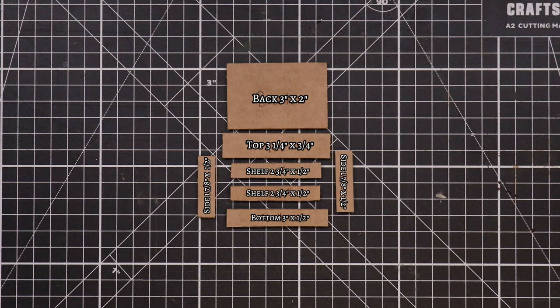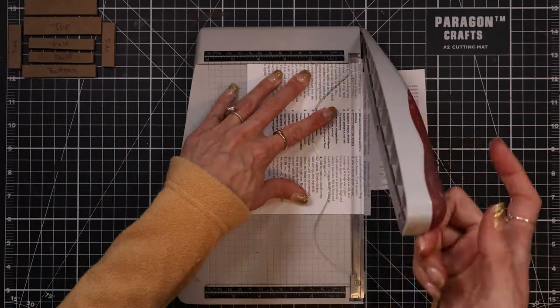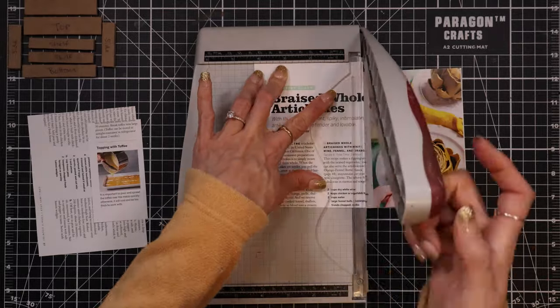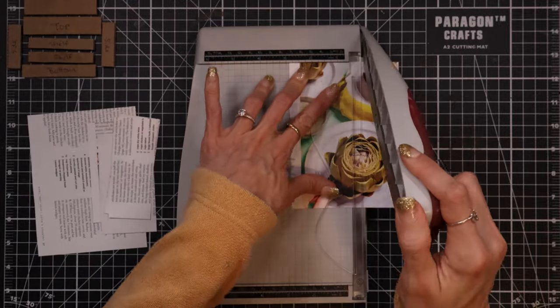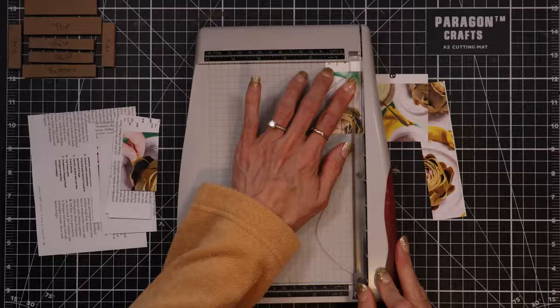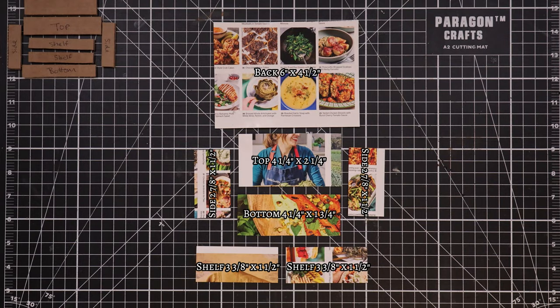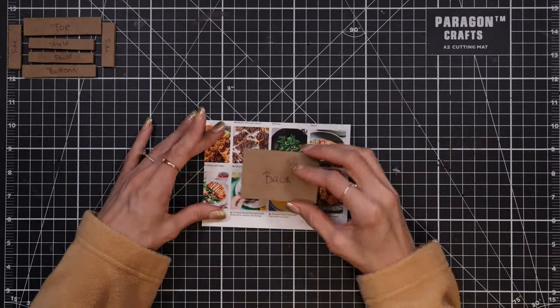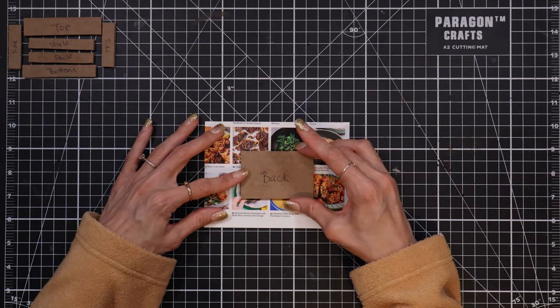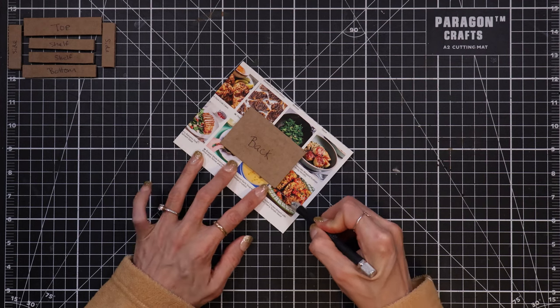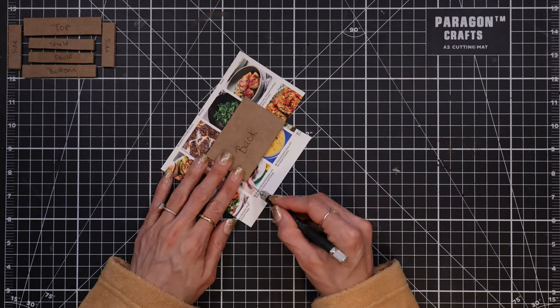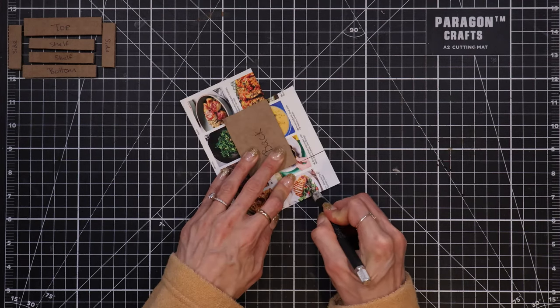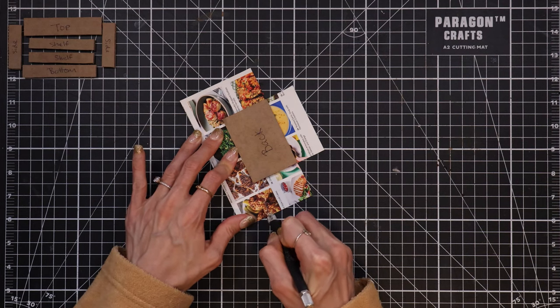Next, I take a page from the magazine and I cut enough to cover each piece of the cardboard. Once again, the measurements will be on the screen and in the description box. I adhere the cardboard to the paper so it doesn't move around when I wrap them. I place the cardboard in the center and then I cut out the corners of the paper to create flaps so when I wrap it up there is less bulk and it's a cleaner fold.